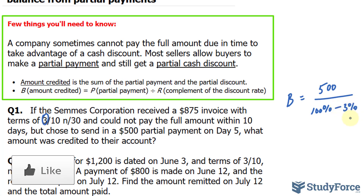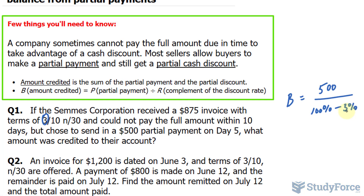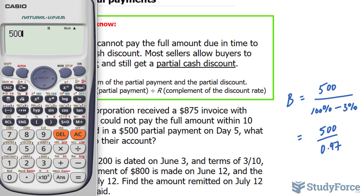We can't use percentages in calculations, so whatever that difference is — which is 97% — you have to convert it to a decimal. 97% as a decimal is 0.97; just divide by 100. So we have 500 divided by 0.97, and that will give us the amount credited.